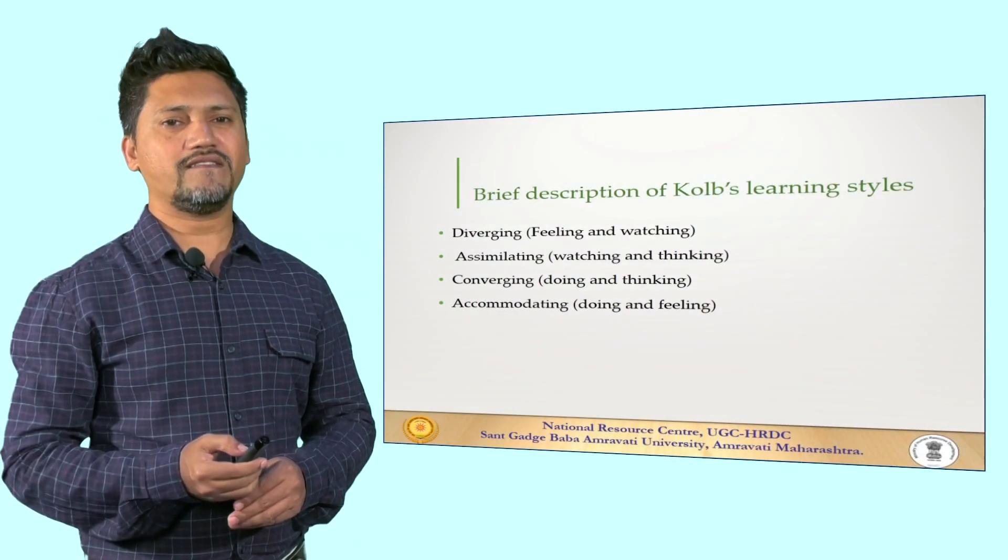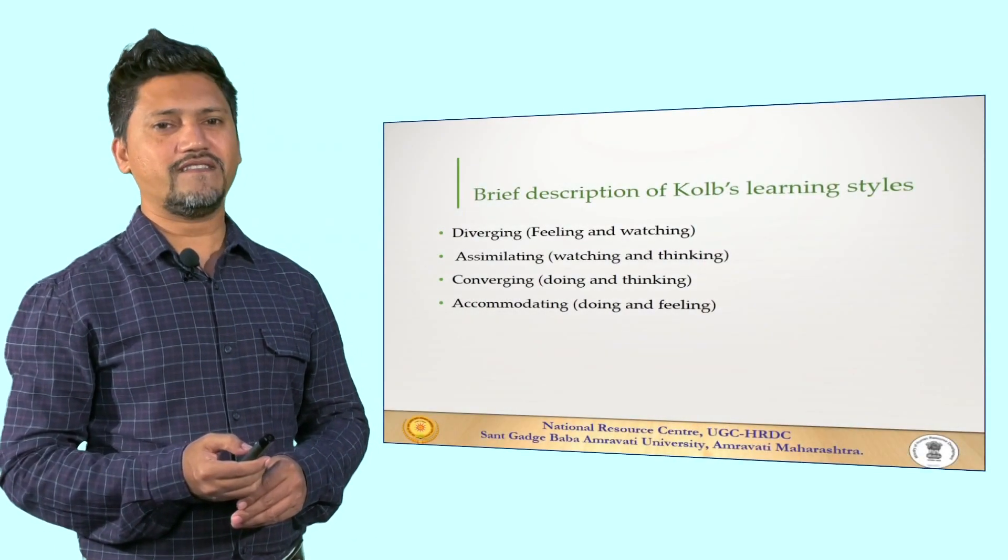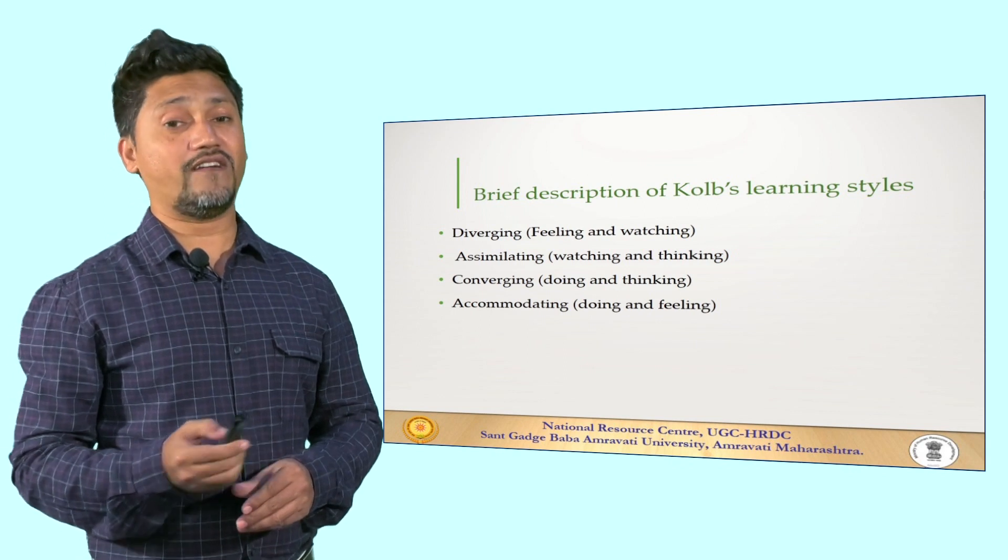This brief description of Kolb's learning styles can be presented in other words. There are learners who can be placed in four categories, namely diverging learners, assimilating learners, converging learners, and accommodating learners.